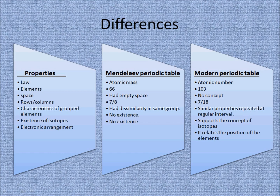Regarding electronic arrangement: in Mendeleev's periodic table, there was no concept of electronic arrangement since it was based on atomic masses. In the modern periodic table, elements are grouped such that their electronic configuration can be deduced easily. This relates the position of elements to the periodicity of their properties — that is, properties that reappear at regular intervals are called periodic properties, and this phenomenon is called the periodicity of elements, covering both chemical and physical properties.